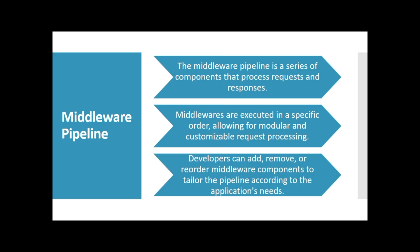Let's talk about the middleware pipeline. The middleware pipeline is a series of components that process requests and responses. Middlewares are executed in a specific order, allowing for modular and customizable request processing. Developers can add, remove or reorder middleware components to tailor the pipeline according to the application's needs.